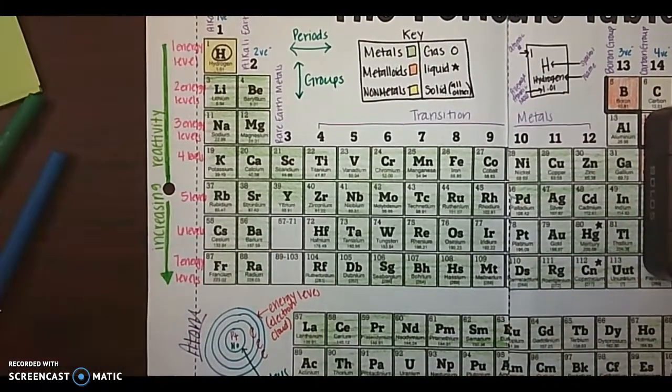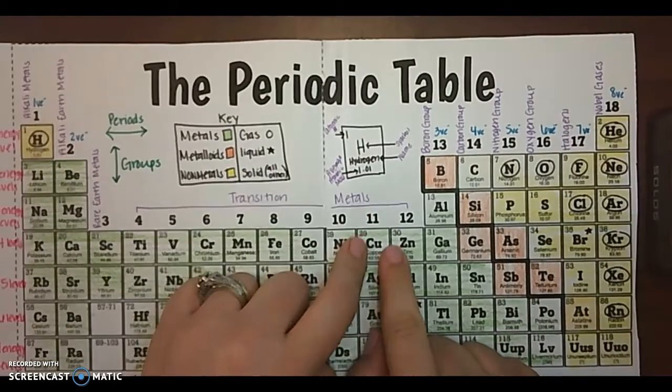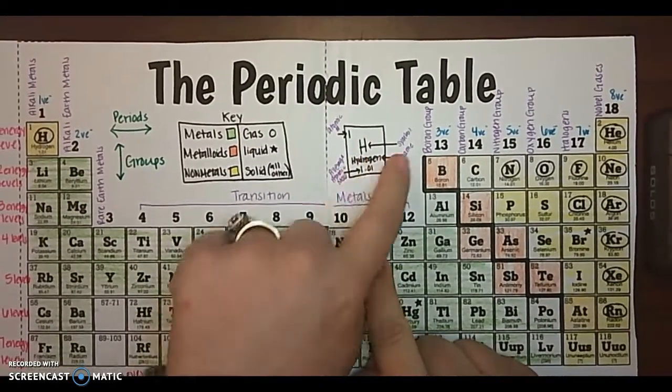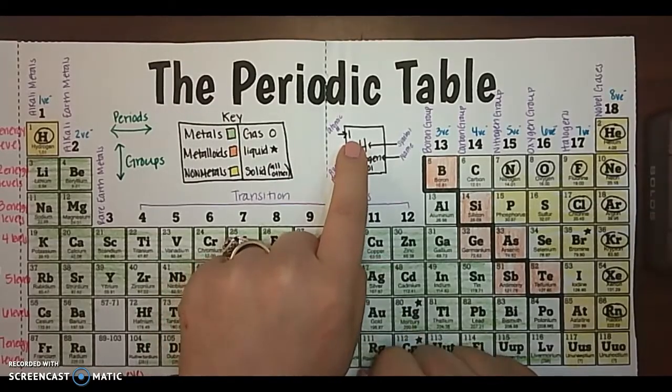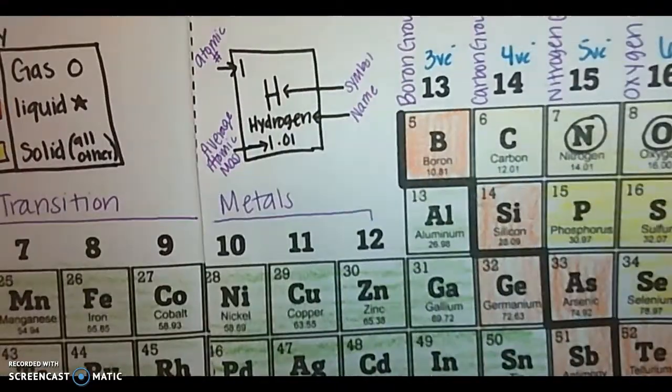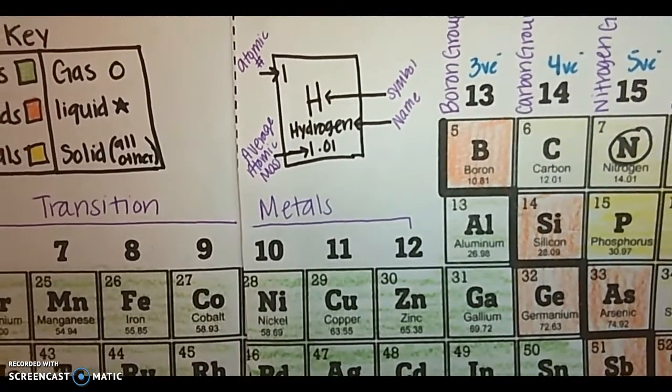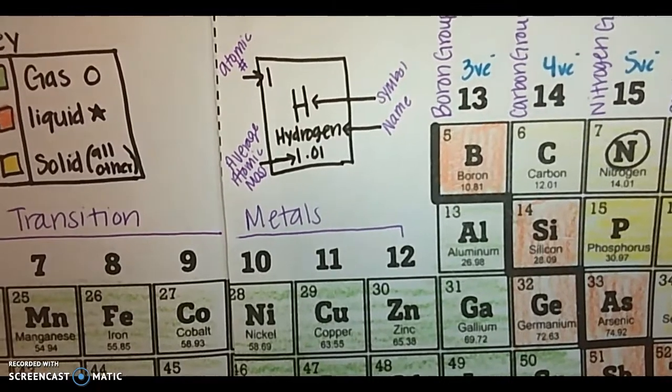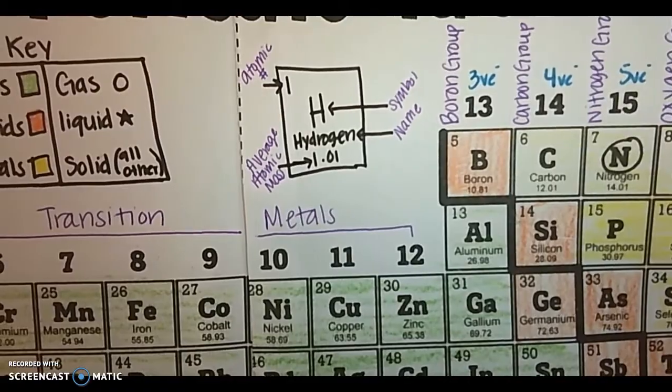When we discuss each element square or periodic table notation, it's going to look like this. So we've got our atomic number here. And I'll bring it a little bit closer so you can see you've got your atomic number at the top. You've got your symbol, your name and your average atomic mass at the bottom. So you need to draw an element square and label it.